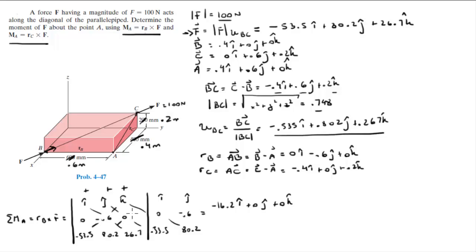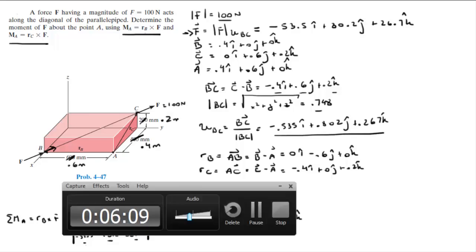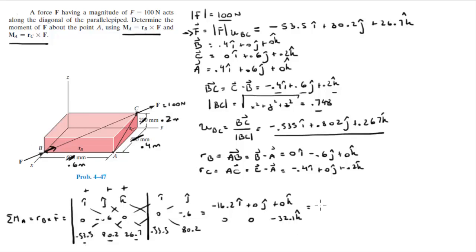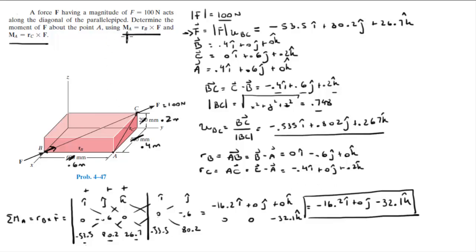Now the negative diagonals: −(−53.5)(−0.6)k = −32.1k; −(80.2)(0)i = 0; −(26.7)(0)j = 0. Adding everything up, the moment MA using Rb cross F equals −16.2i + 0j − 32.1k.